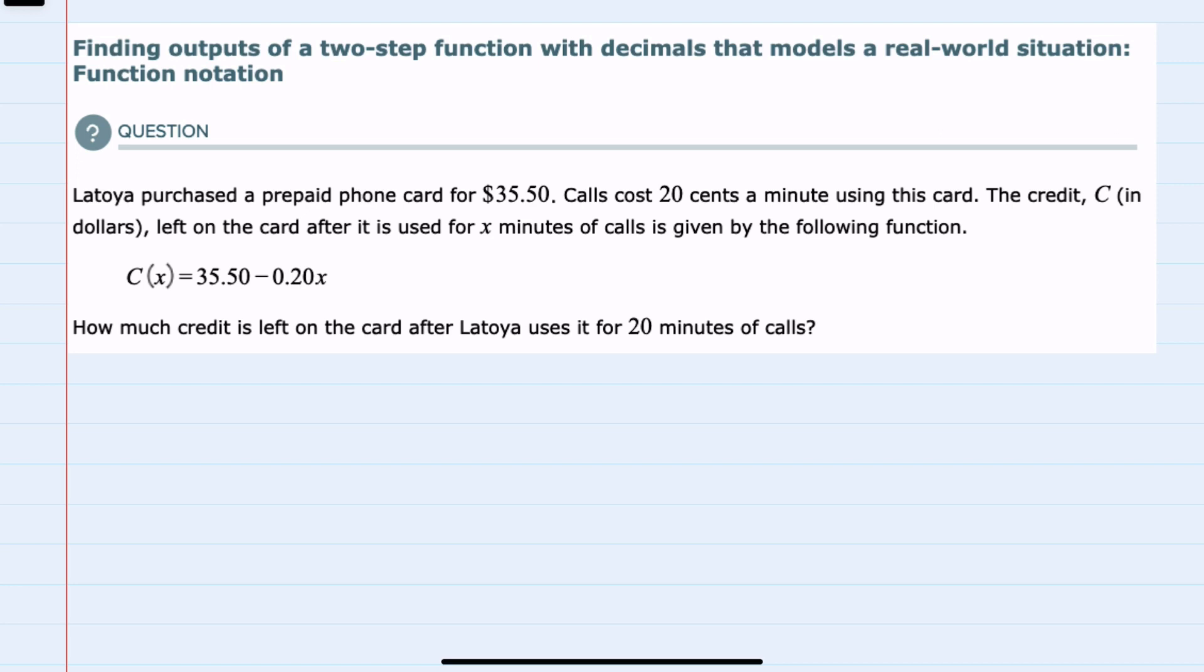We're told that LaToya purchased a prepaid phone card for $35.50. Calls cost $0.20 per minute using the card. So the credit, C, expressed in dollars,